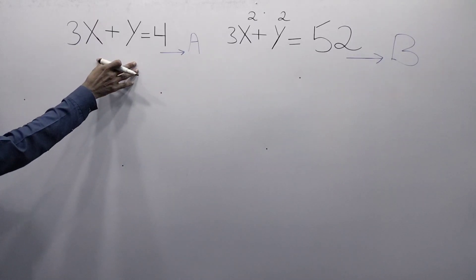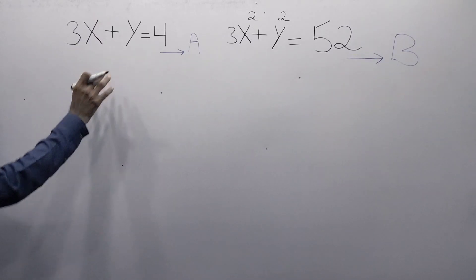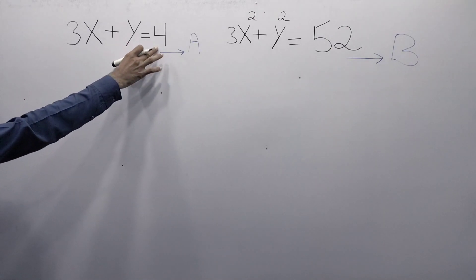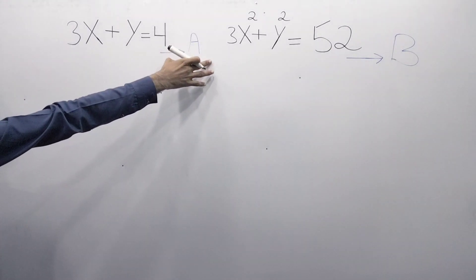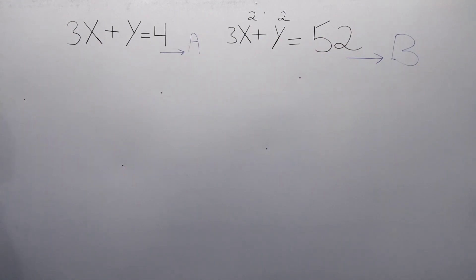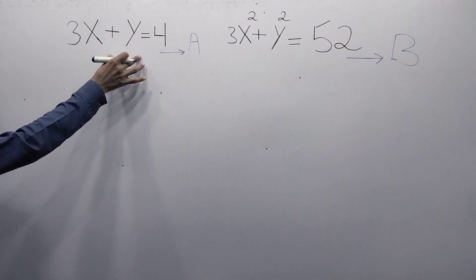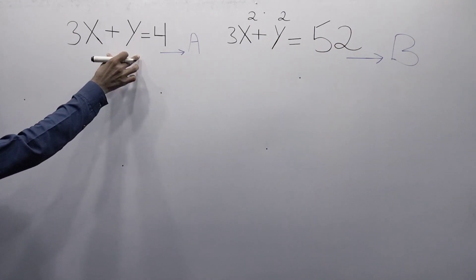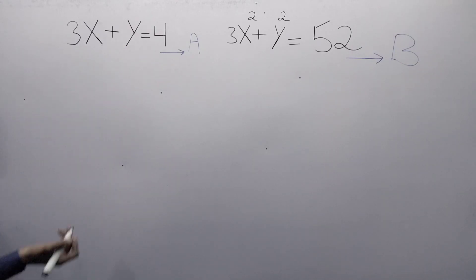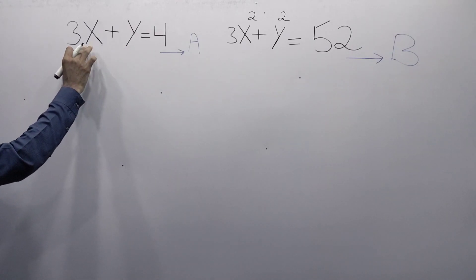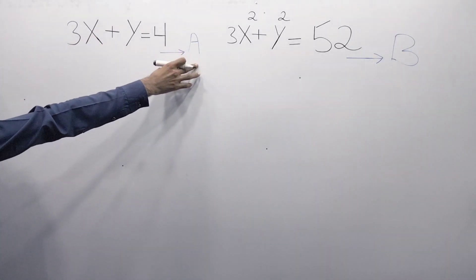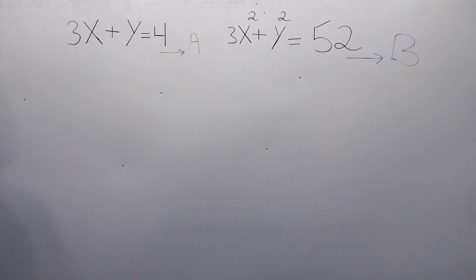The mathematical problem given here is a system of equations: equation A is 3x plus y is equal to 4, and equation B is 3x squared plus y squared is equal to 52. We are required to solve this system of equations and find the values of x and y.